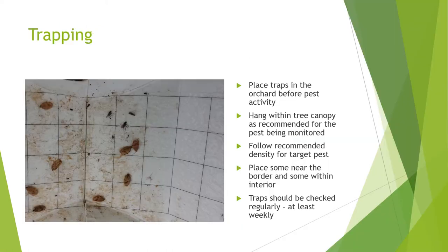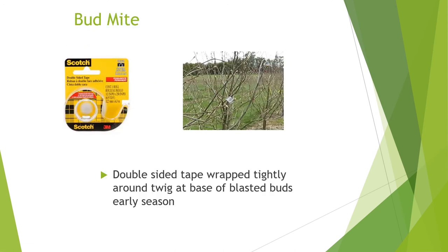General protocols for traps: the traps need to be in the orchard before the pests become active, so get those traps out a week or two before you expect them. Hang the trap within the canopy as recommended for the pest being monitored, follow the recommended density for the target pest, and you want traps near the border and some within the interior of the orchard. Check those traps regularly — at least weekly — so you know when the insects are flying into the orchard and when you reach the peak trap catch, because that's when they are most active and when controls need to be implemented.